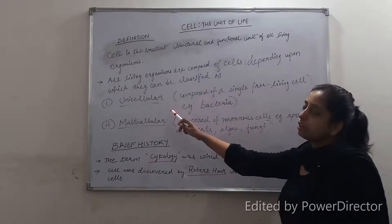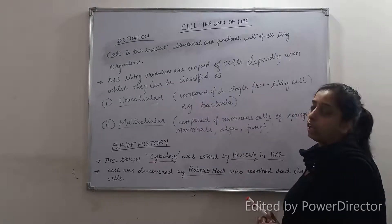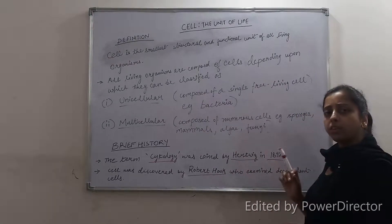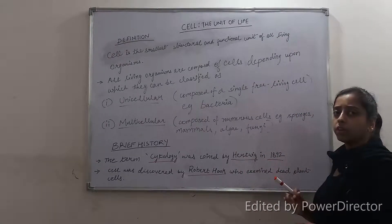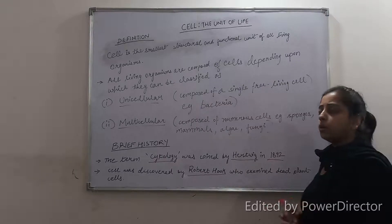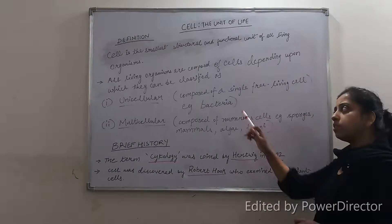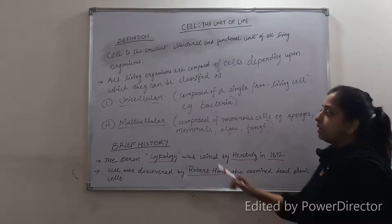The unicellular organisms are simple organisms. They are composed of only a single cell which is pre-living. The basic example of a unicellular organism is bacteria.